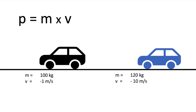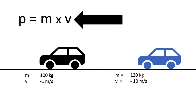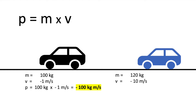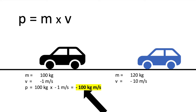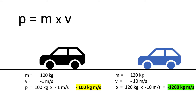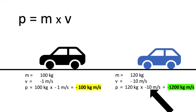To calculate the momentum of both cars, you recall the equation p equals m times v. The momentum for the black car is 100kg times minus 1m per second, which gives a momentum of minus 100kgm per second. The momentum of the blue car is 120kg times minus 10m per second, which gives a momentum of minus 1200kgm per second.